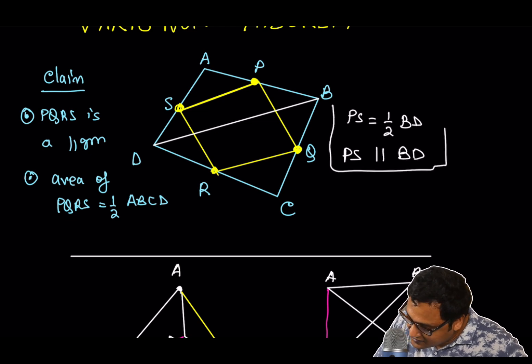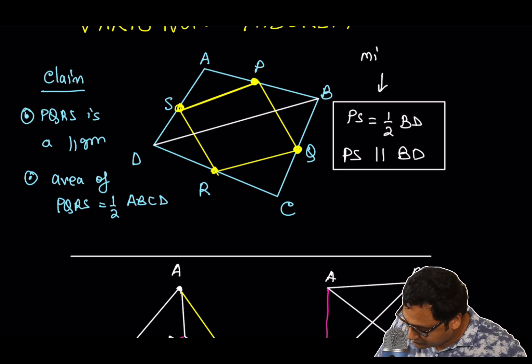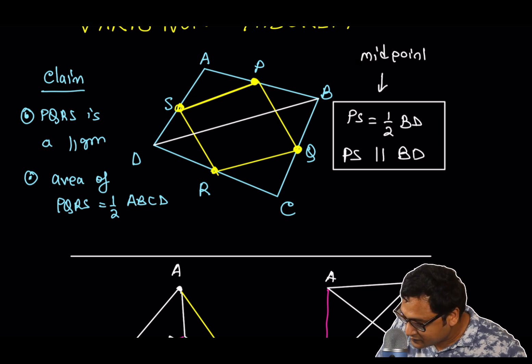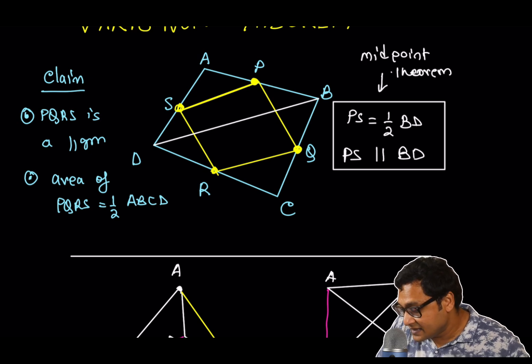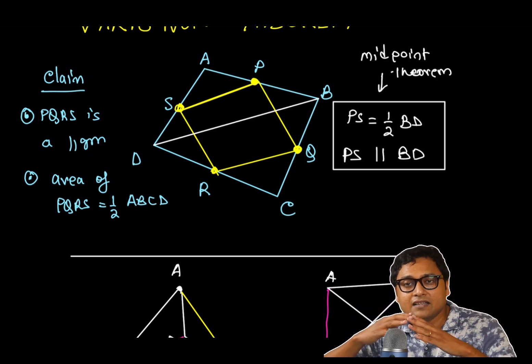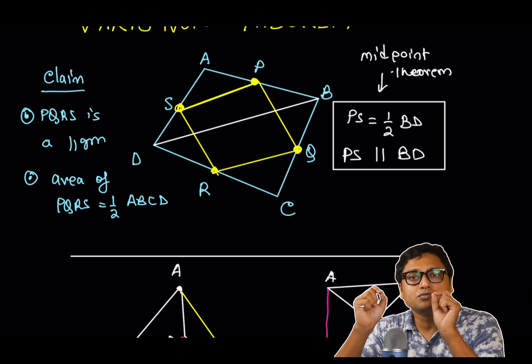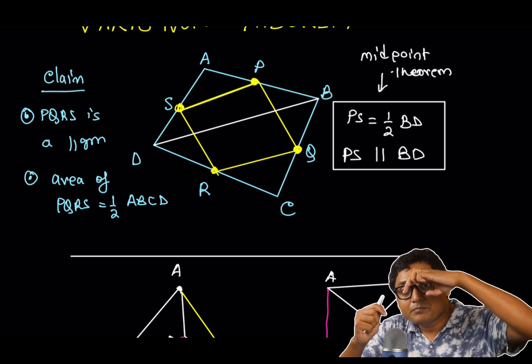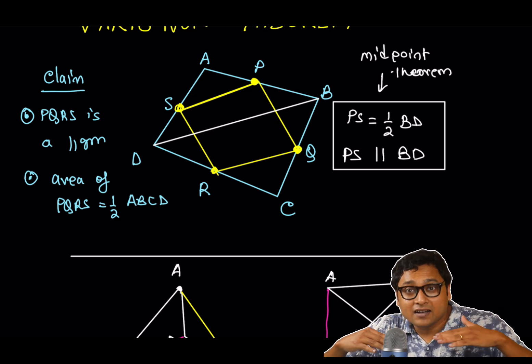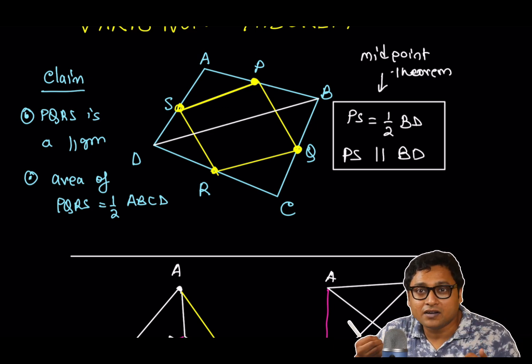Similarly, both of these conclusions are from the midpoint theorem. What is the midpoint theorem? The midpoint theorem says that if in any triangle you have two points, the midpoints of two sides, if you join them, that piece will be parallel to the third side and half of the third side.